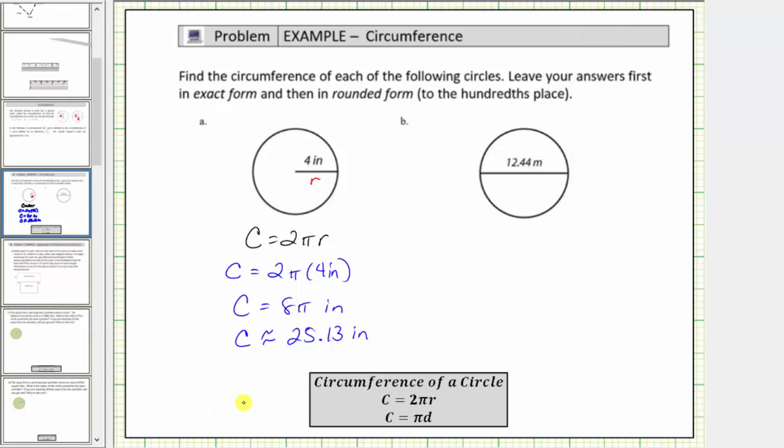Now for our second example, notice how we're given the diameter, and therefore this time we use the formula C equals πd. So we substitute 12.44 for the diameter. So we have C equals π times 12.44 meters, and therefore the exact circumference is 12.44π meters.